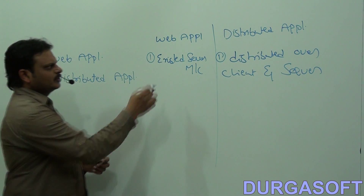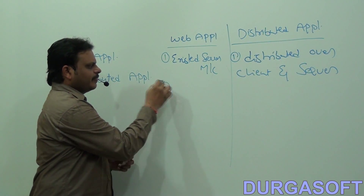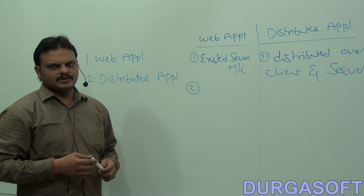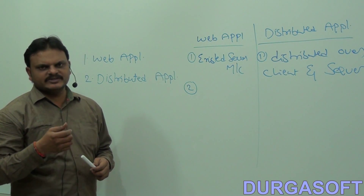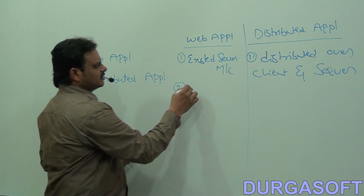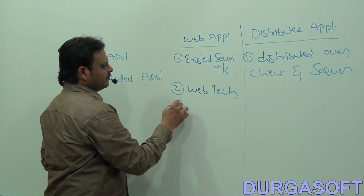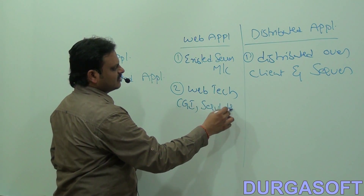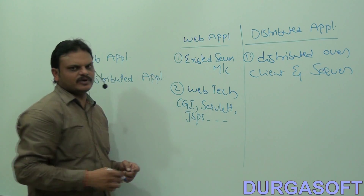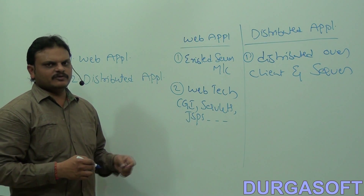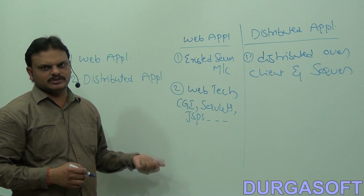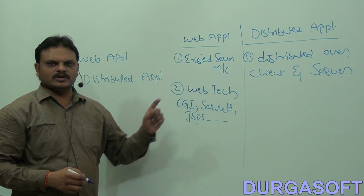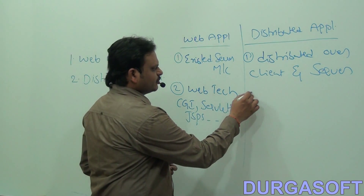The second difference: to design web applications, we use a separate set of technologies called web technologies. Examples of web technologies include CGI, Servlets, JSP, and so on.